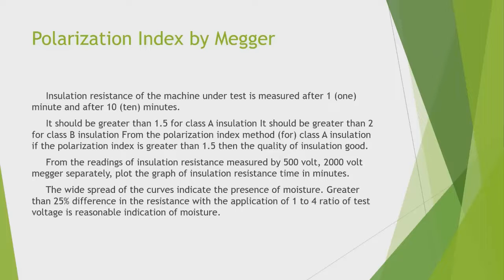For Class A insulation, if the polarization index is greater than 1.5, then the quality of insulation is good. This is determined from readings of insulation resistance measured by 500V to 1000V Megger separately.